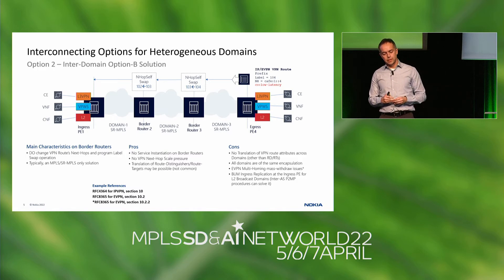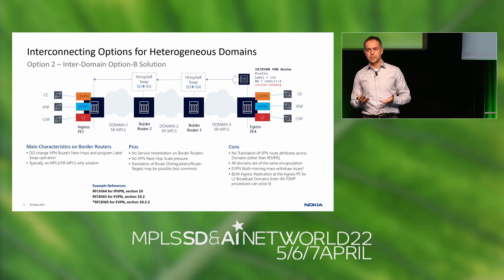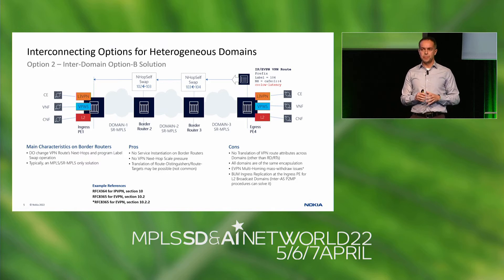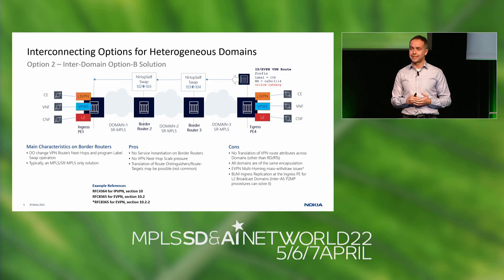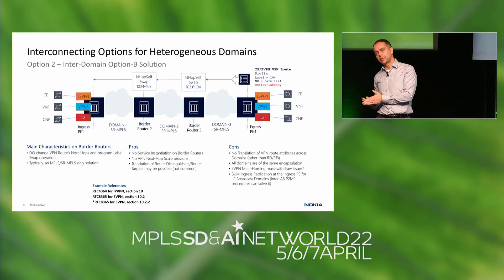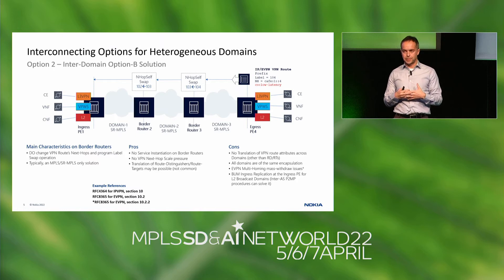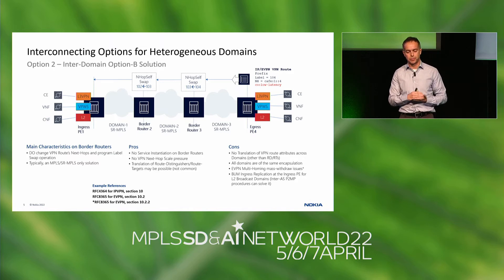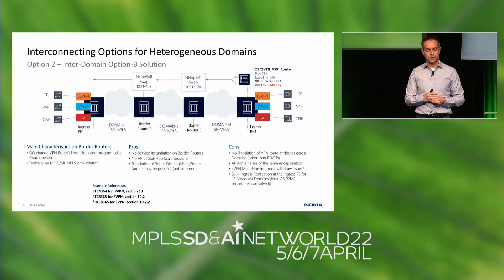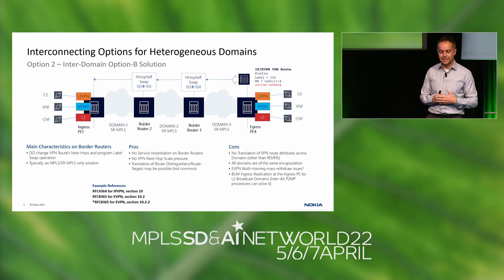The drawbacks of option B: there is no translation of other VPN route attributes normally, and all domains are typically of the same encapsulation. For the EVPN case with multi-homing as documented in RFC 8365, you will have issues with things like mass withdrawal — the ingress PE1 expects MAC routes and AD per ES routes with the same next hop to correlate them, but the next hop keeps being changed by the border routers. Also, BUM ingress replication for EVPN layer two multipoint services is not efficient, requiring PE1 to replicate as many copies as needed.